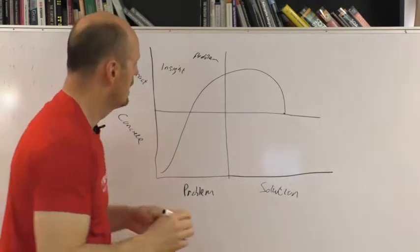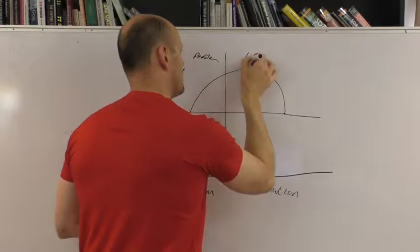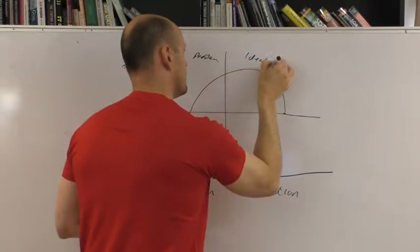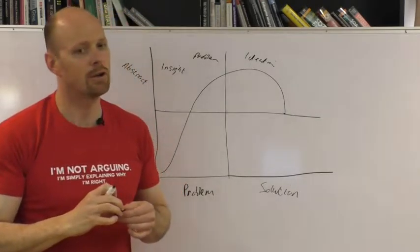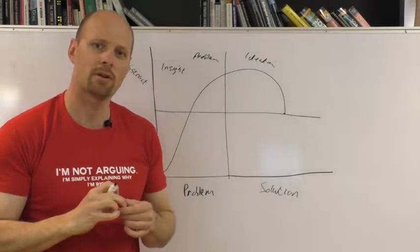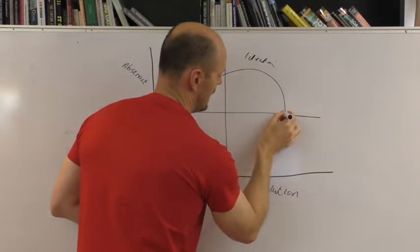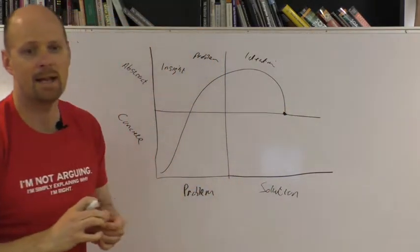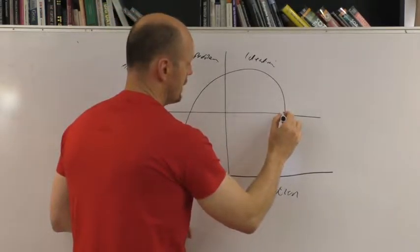Then you move over into solution space. This is really where the ideation occurs. You can do things like probes, concepts, experiments, all of those types of things, until eventually you get to this point where you've experimented and validated your idea and your concepts. You can iterate through that.